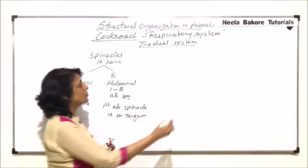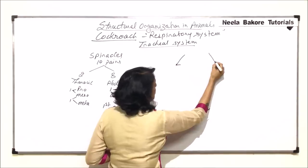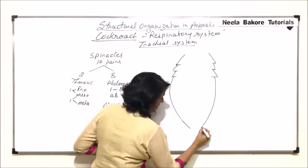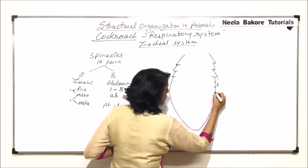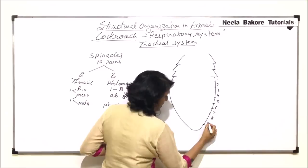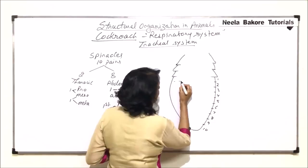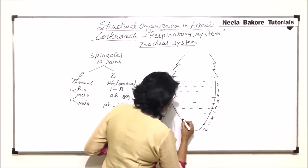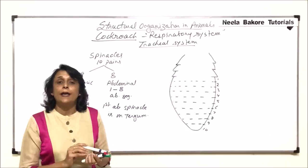When we draw this structure, we make the segments: prothorax, mesothorax, metathorax, and then the 10 segments of the abdominal region, numbered 1 through 10. Now in these segments, we are going to draw how the tubes are arranged and where the spiracles are, so we can understand how the system works. Let us see the openings in the thoracic region.